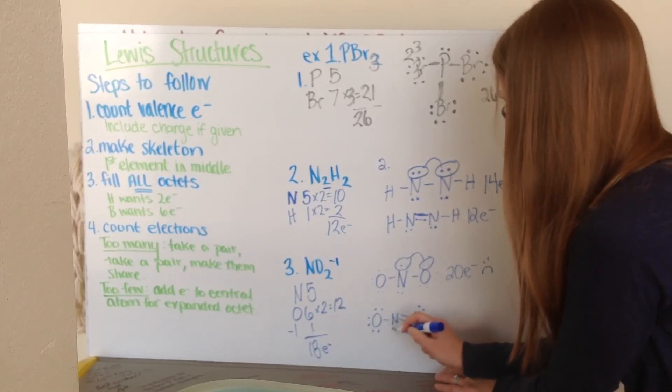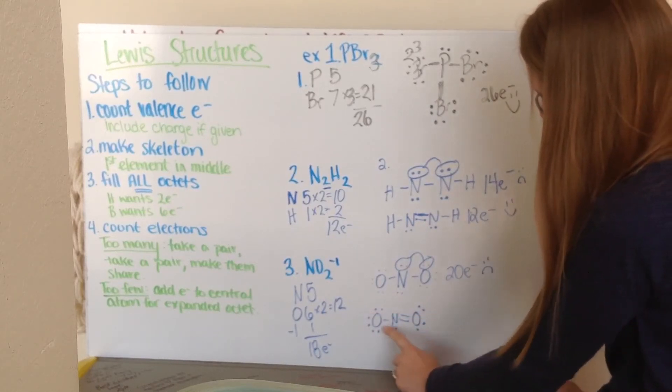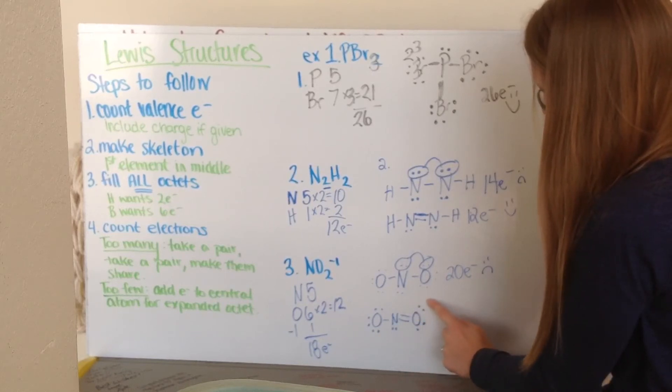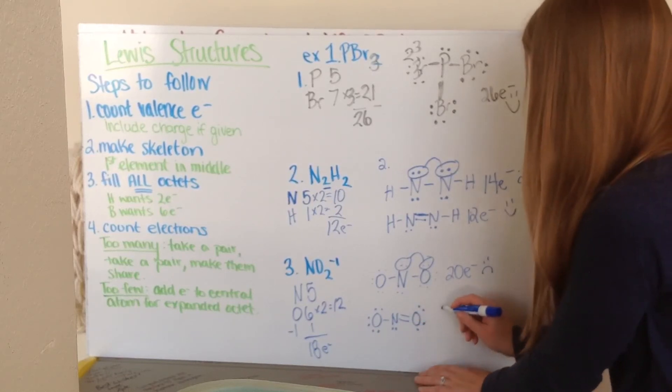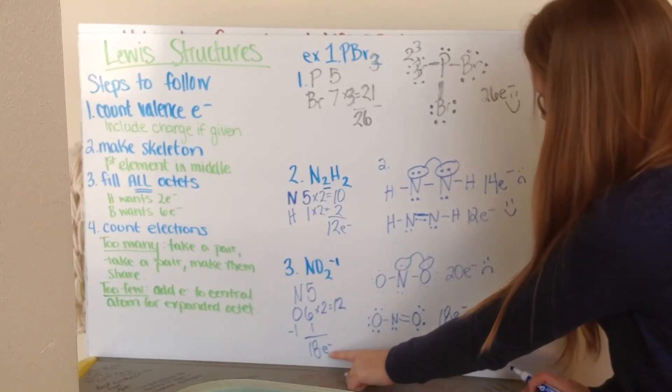So here, and then this oxygen over here still has its 6 valence electrons. Nitrogen has its 2 here. So go ahead and I count again. 2, 4, 6, 8, 10, 12, 14, 16, and 18. So I have 18 electrons now. I look back and I say, yay, that's what I wanted.